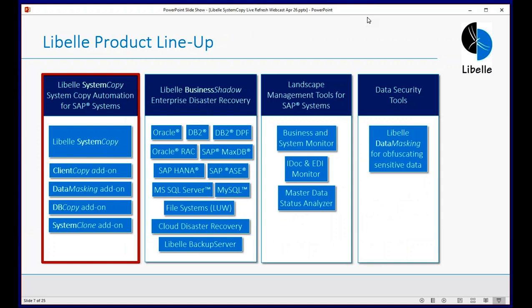As far as our product lineup is concerned, for today we'll be talking primarily about the system copy product lineup. The core is the system copy solution, with add-ons for local client copies, data masking — which allows you to obfuscate or mask data in non-production or QA systems — and a database copy add-on. We also have our Business Shadow disaster recovery solution, which is cross-platform, landscape management tools for things like IDOC and EDI monitoring, and data masking as a standalone solution as well.